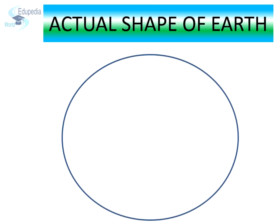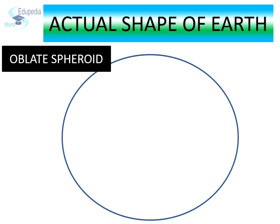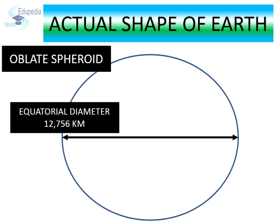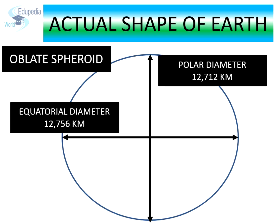At present we are all well aware of the fact that the Earth is spherical in shape. In fact, our Earth is not a perfect sphere. Rather the Earth is an oblate spheroid, bulging slightly at the equator and flattened slightly at the poles. The diameter of the Earth is 12,756 km at the equator, whereas it is 12,712 km at the poles. This is due to the constant spinning of Earth which produces centrifugal force.